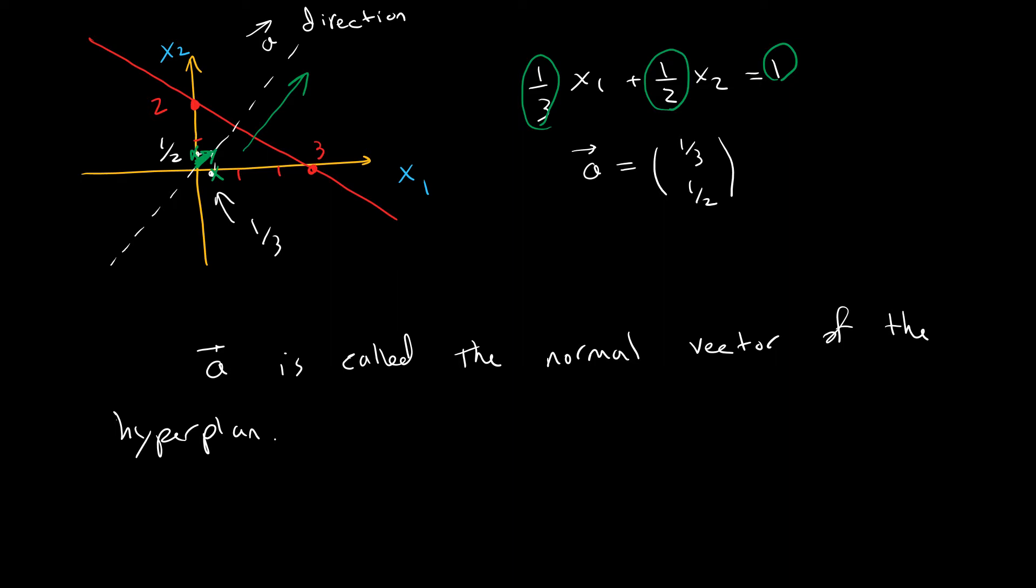This direction is not important for this question, but when we study half planes, it will be important. This little vector a is called the normal vector of the hyperplane, and 'normal' means it is perpendicular to this plane. So we can characterize a hyperplane using the normal vector.